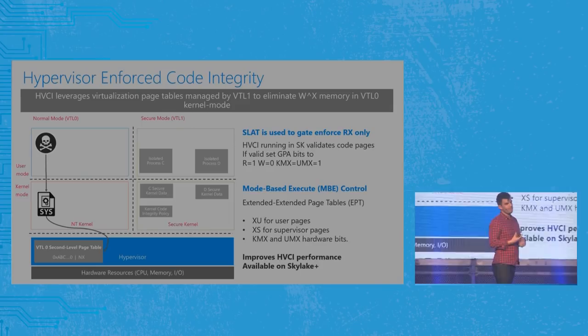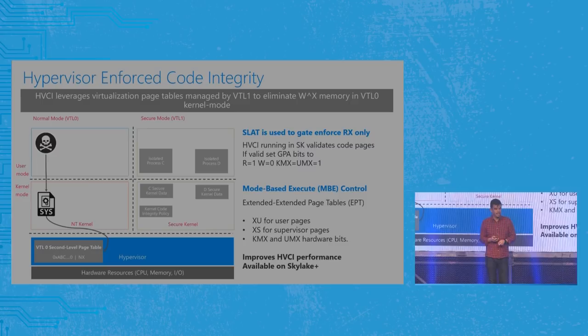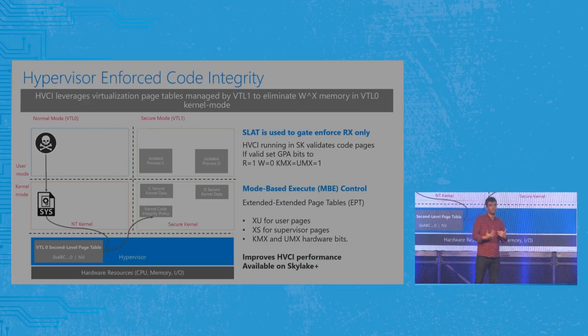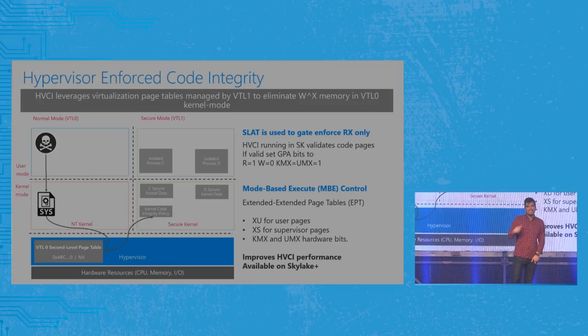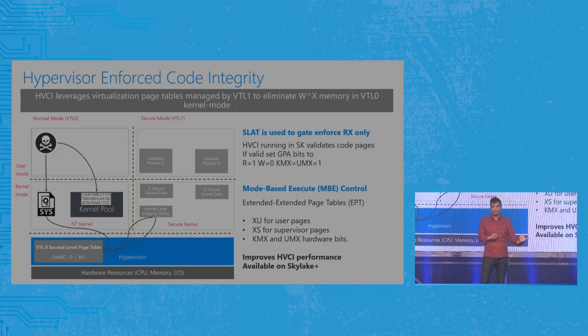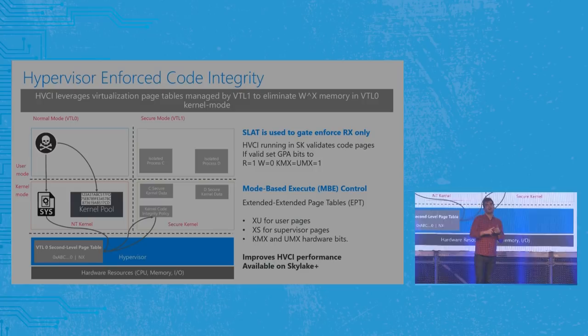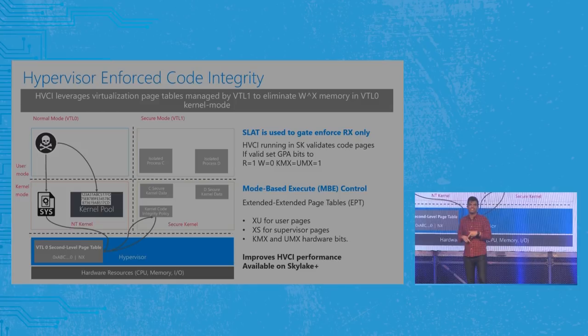Before mapping those pages, the hypervisor checks against the code signing policy of that image, determines if the user has set any of those policies — if it's Microsoft-signed — and goes through numerous checks. Only if those checks pass will the hypervisor tell the memory manager to map that executable back into kernel, and the page protections on that mapping will be execute and read-only — no write. That guarantees the code executing in the kernel is signed by Microsoft and can't be tampered with, enforced by the hypervisor.